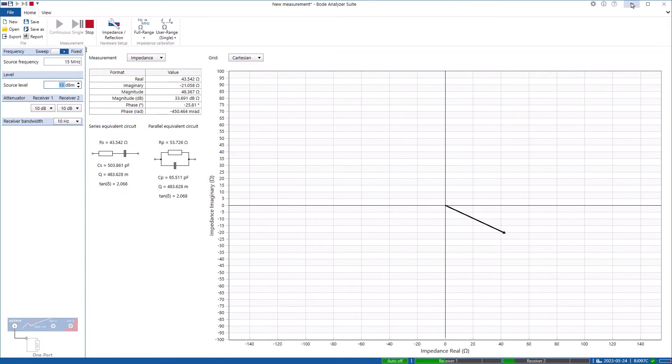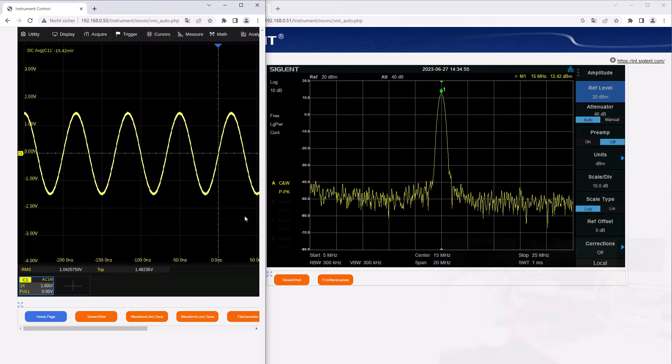We are generating a 13 dBm sine wave at 15 MHz. So let us now go to our oscilloscope and to our spectrum analyzer, this is what we see.